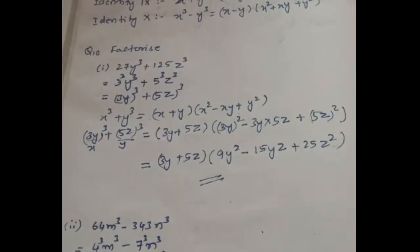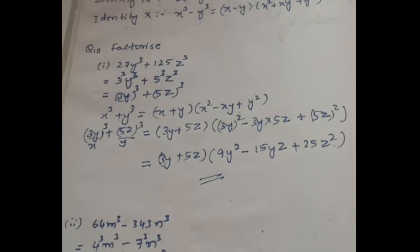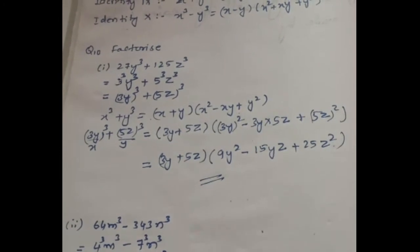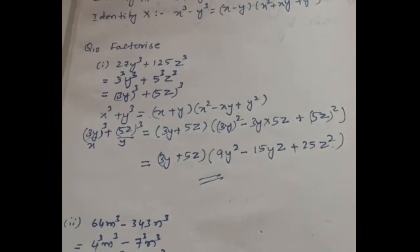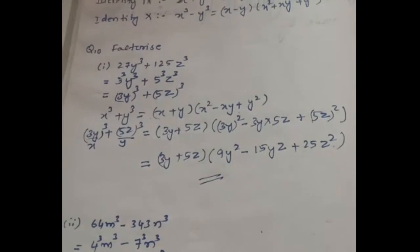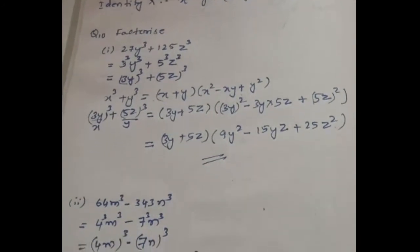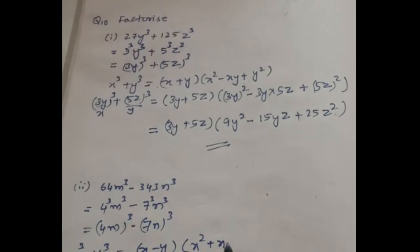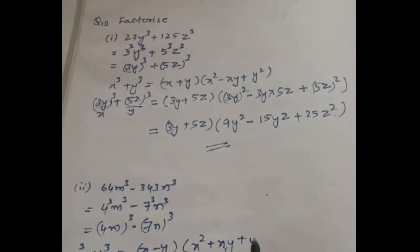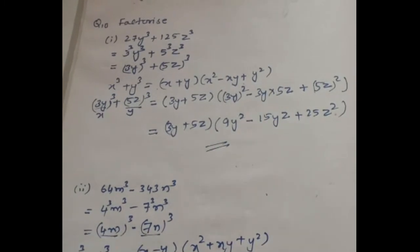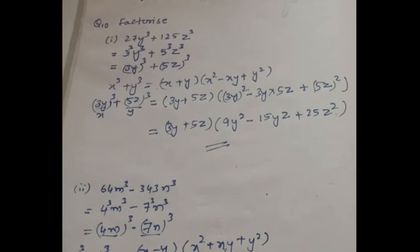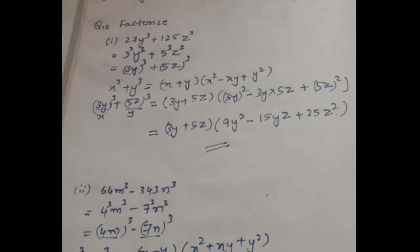This is now in the form of x cube minus y cube, so we write the identity that is useful here: x cube minus y cube is equal to x minus y into x square plus xy plus y square.